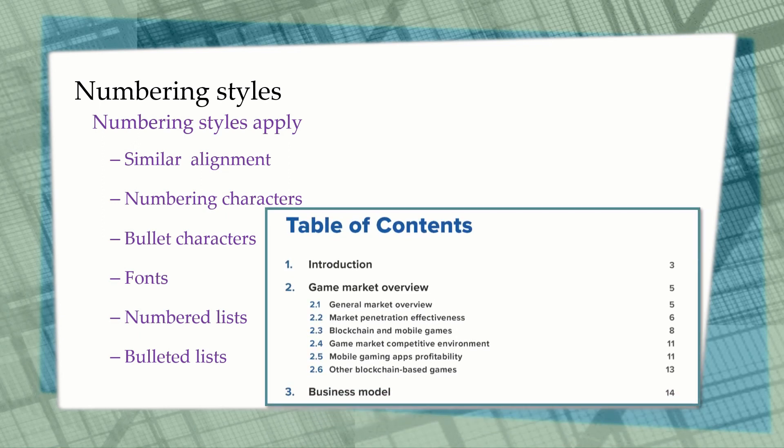The fifth type is the numbering style, also called list styles. Numbering styles are applied to documents where we need similar alignment, numbering, bullets, or a specific type of font or list. We usually use this while creating table of contents in OpenOffice Writer. This is an example of how we use numbering styles, as you can see in this picture.